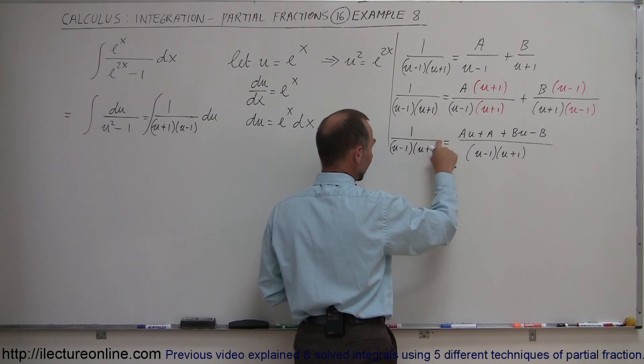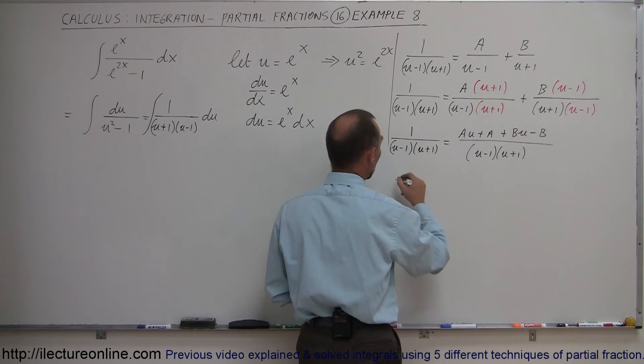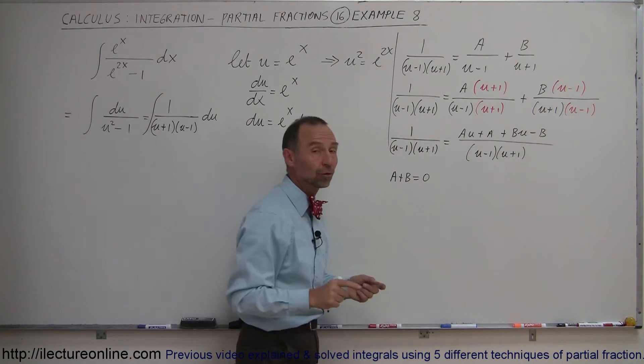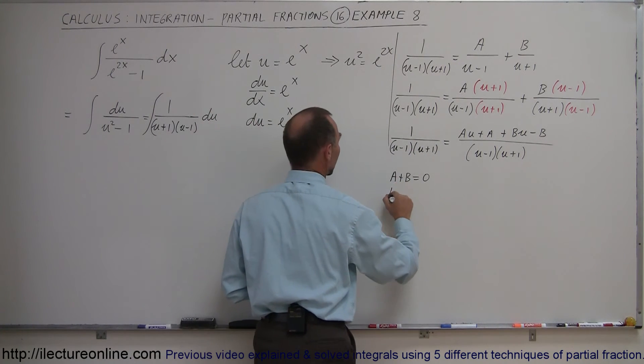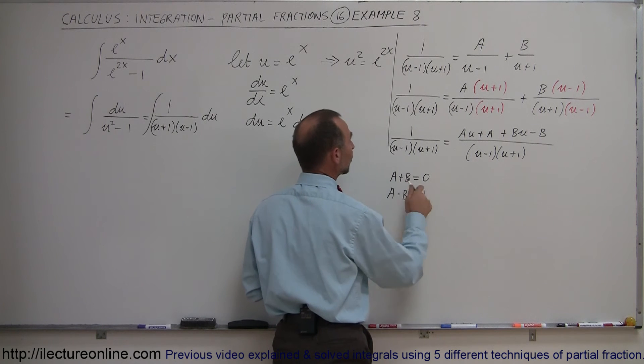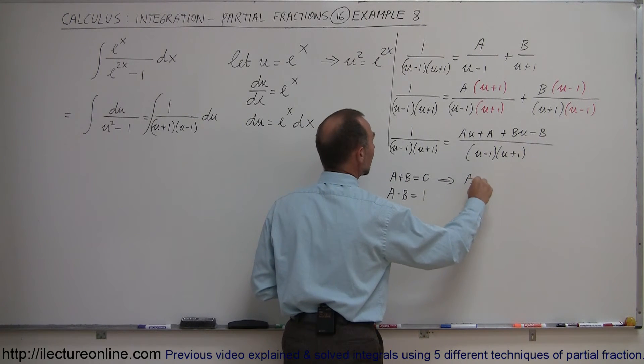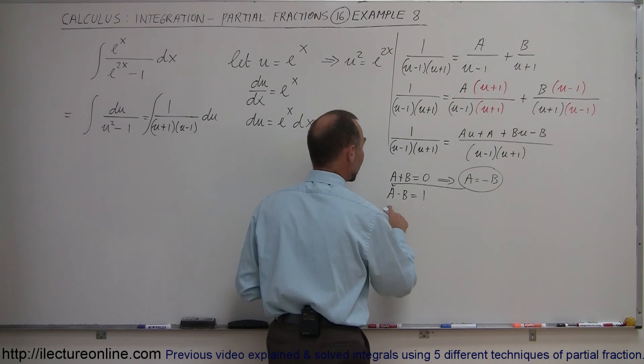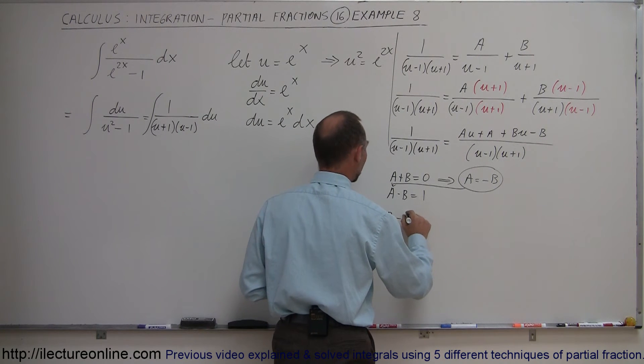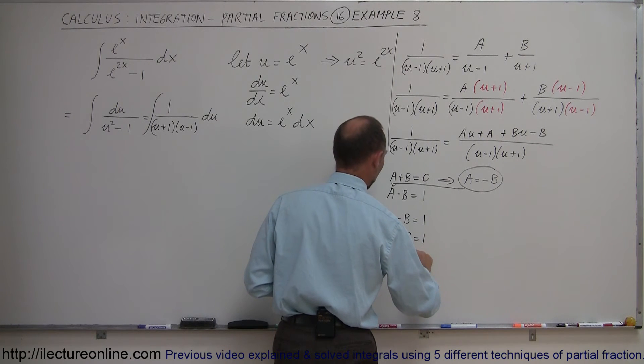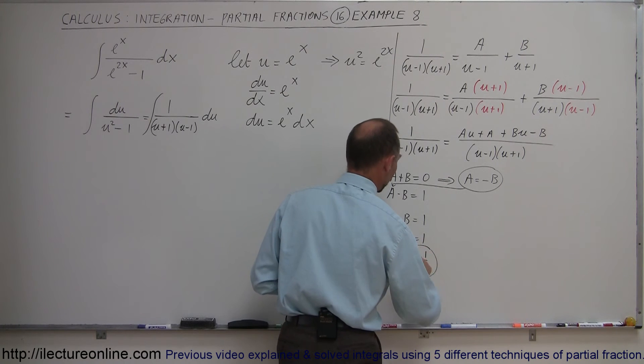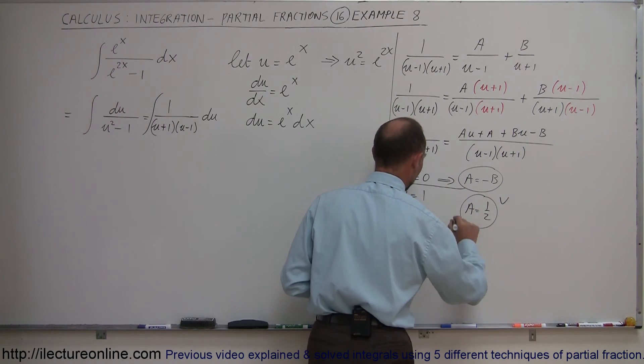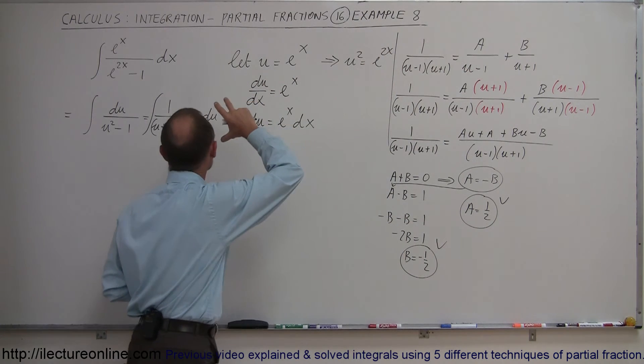Since there are no u terms on the left side, A + B = 0. The constant term gives us A - B = 1. From the first equation, A = -B. Substituting: -B - B = 1, so -2B = 1, and B = -1/2. Therefore A = 1/2.